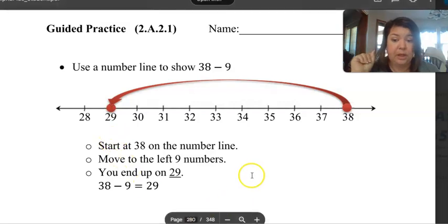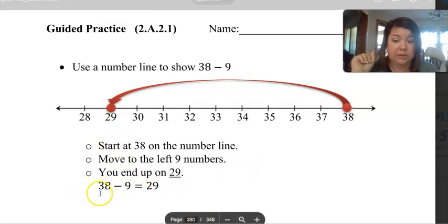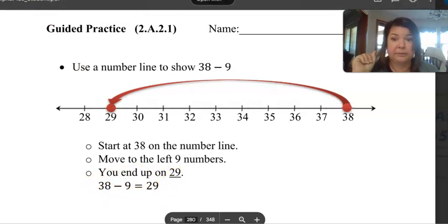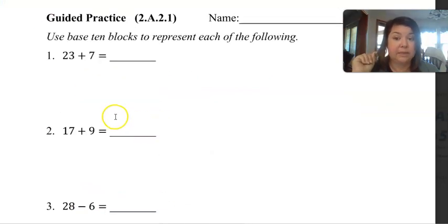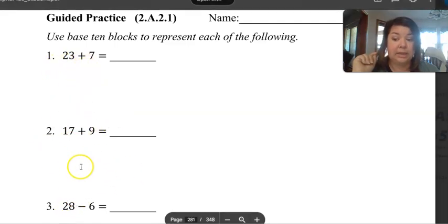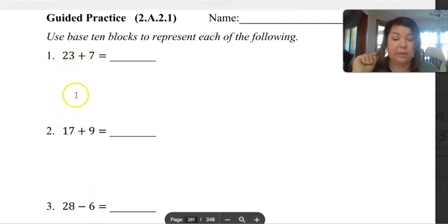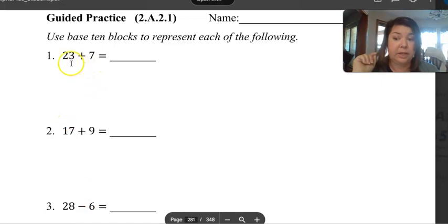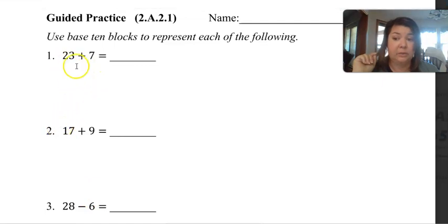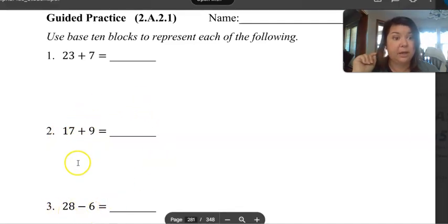So our number sentence is thirty-eight minus nine equals twenty-nine. Okay, now you can use base-10 blocks to help you with these if you want, or you can just add these and subtract. Number three, so pause the video and add 23 plus 7, 17 plus 9, and then subtract 28 minus 6, and then turn the video back on to check your work.